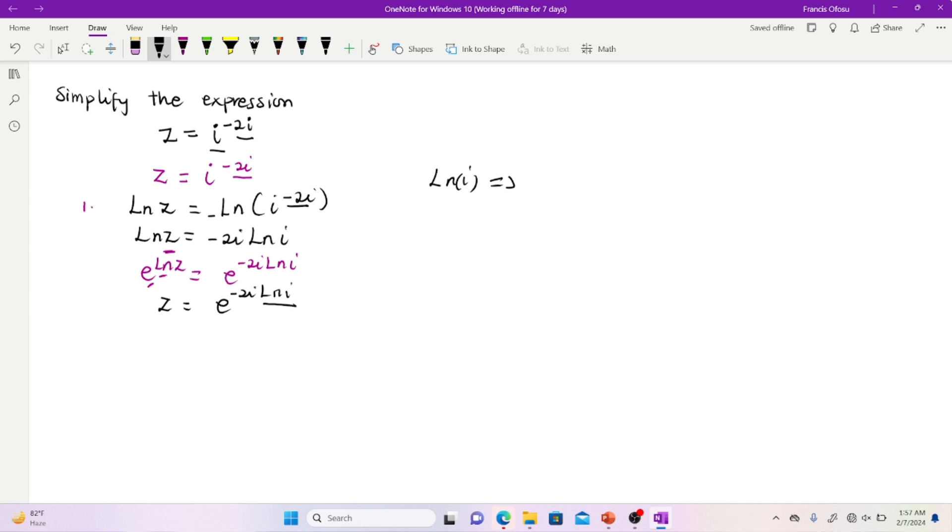So expressing a complex number in the Euler's notation, you need your r, you need your theta. Then the expression is going to be r multiplying e to the power i theta, where r is your modulus and theta is the argument.